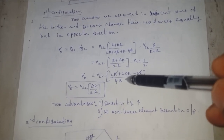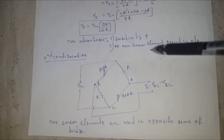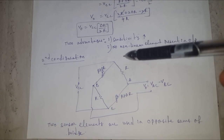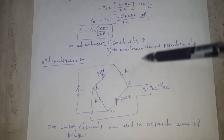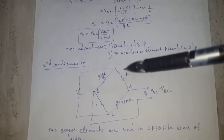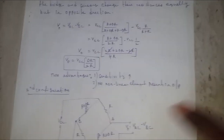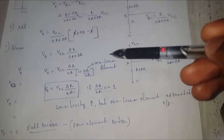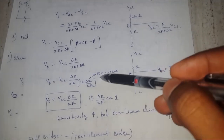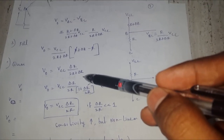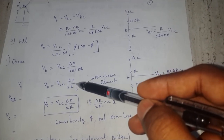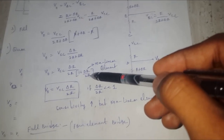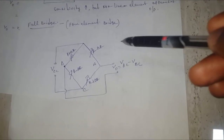The first half bridge configuration is advantageous because sensitivity is increased compared to the quarter bridge and there is no nonlinear element in the output voltage. In the second configuration of the half bridge, two sensing elements of the same type change resistance in the same direction, but are placed in opposite arms of the Wheatstone bridge. The output for this configuration is V_out = VCC × (ΔR / 2R) × 1/(1 + ΔR/2R), so a nonlinear element is still present even though sensitivity is increased.